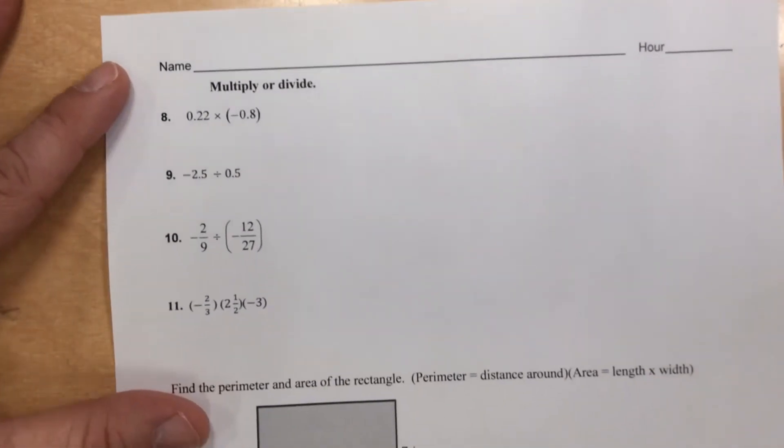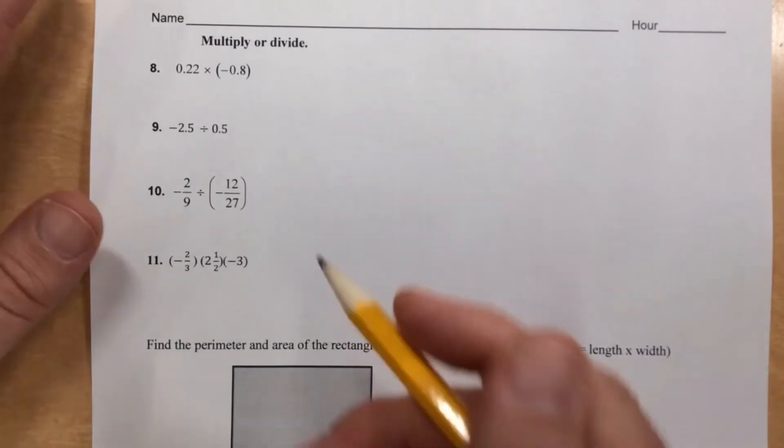The second side, or the second part of this quiz, was multiplication and division.